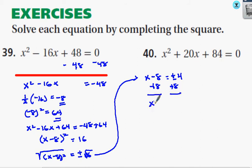So I get x is equal to 8 plus or minus 4. This really means I have two answers: x is equal to 8 plus 4, and x is equal to 8 minus 4, which is 12 and 4. So there are the two responses for number 39.